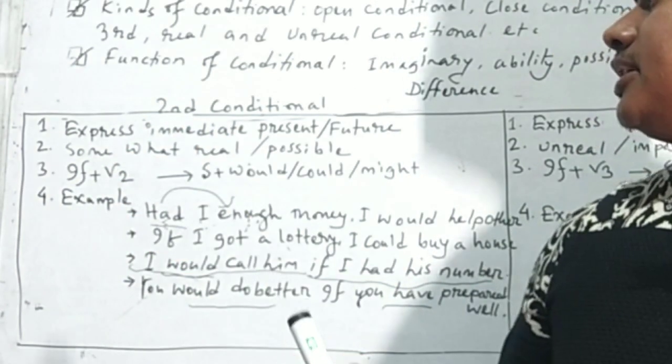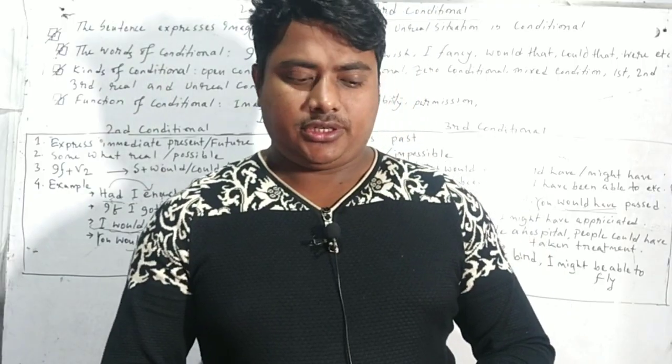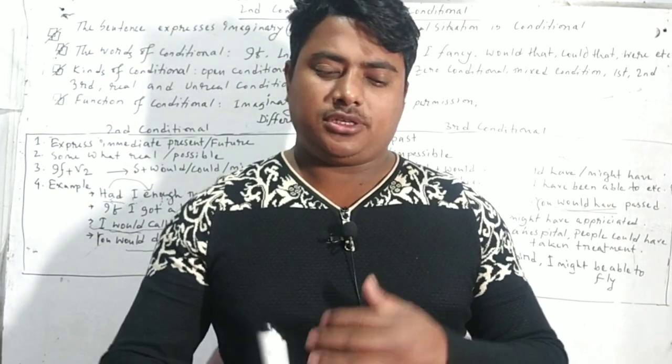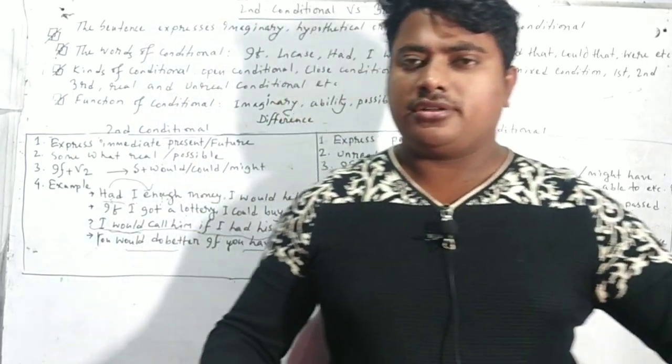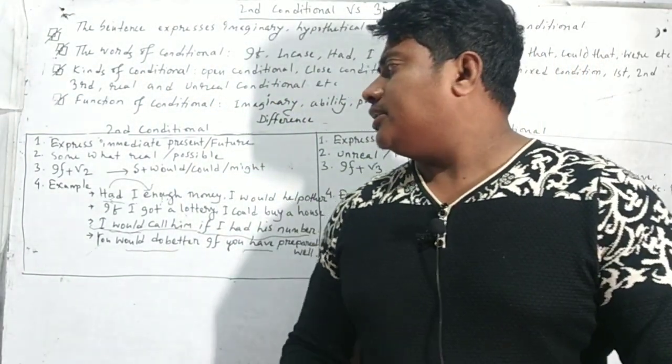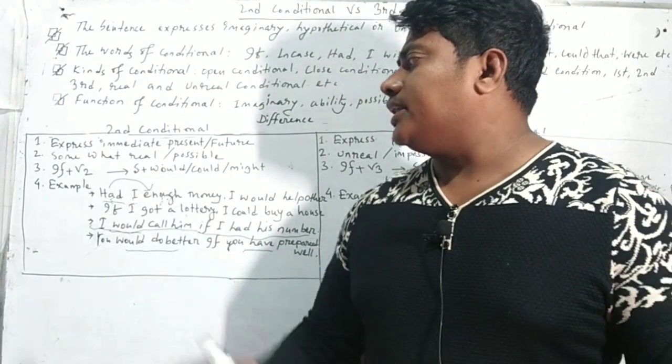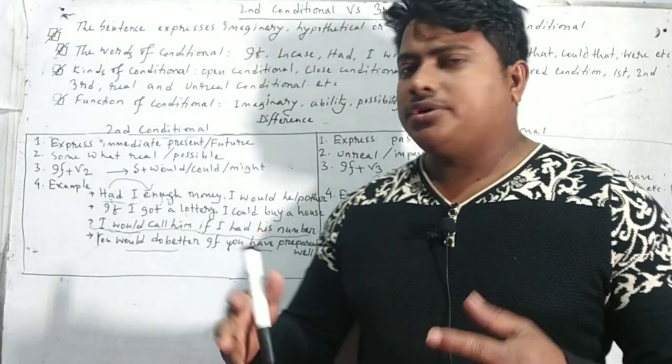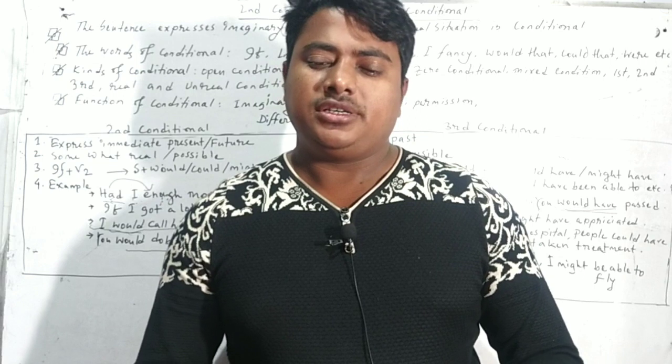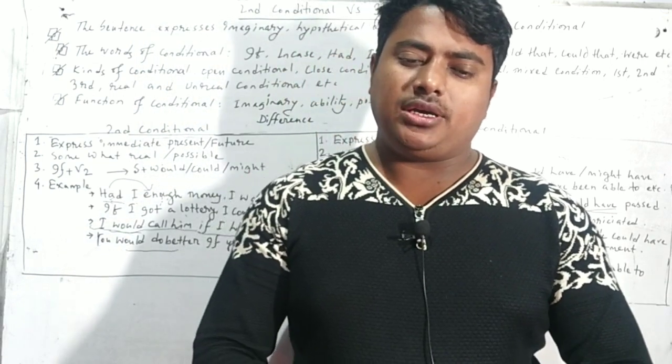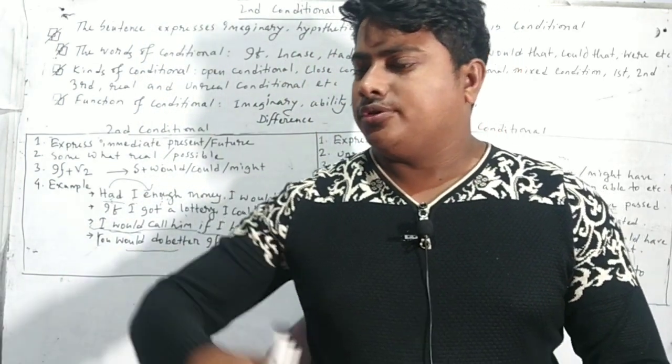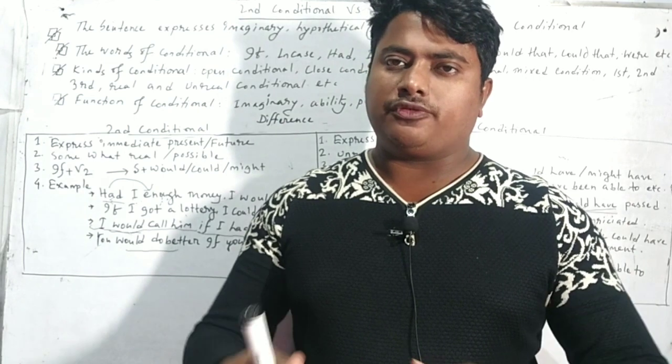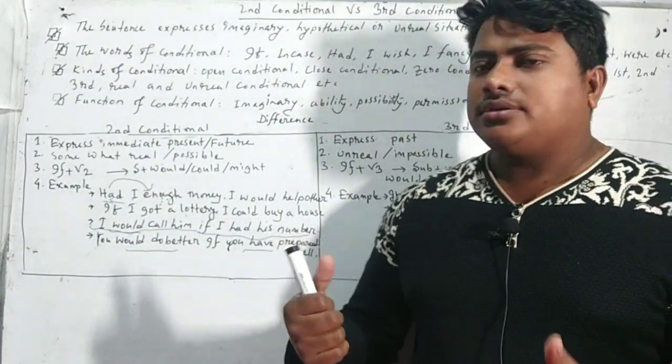Now the difference between second conditional and third conditional. Though second conditional expresses the immediate present or future, second conditional expresses the immediate present or future. It always talks about the actions that come from the present or future. Then second thing is somewhat real or possible. If we do something in present tense, it may be possible, the result may be possible to get in future. So sometimes second conditional are real or doable or possible.